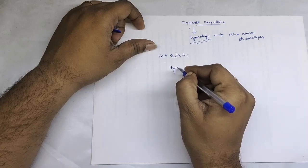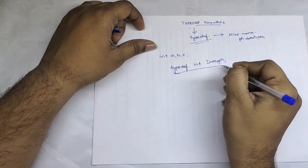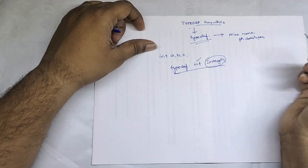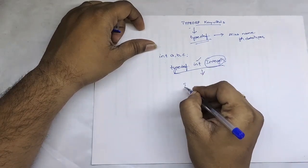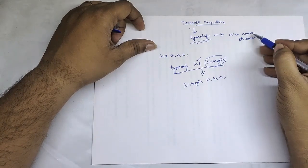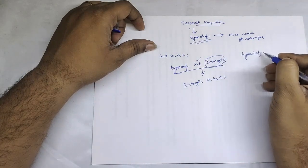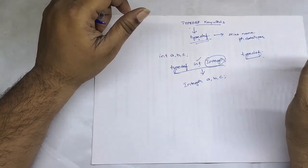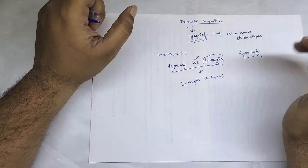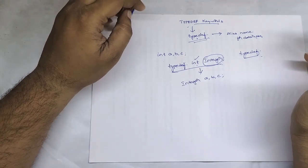If you use typedef like this: typedef int integer — this implies that wherever we are using int, we can replace this keyword with the alias name. Later we can declare variables using: integer a, b, c. So for giving an alternate name for data types we use the typedef keyword. We can also use typedef for structures, unions, and all data types. We'll see a practical session by executing a small program, giving alternate names for int, float, char, and structures.